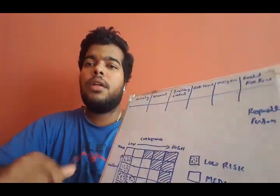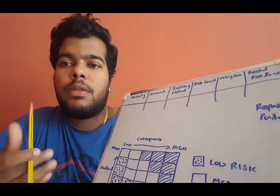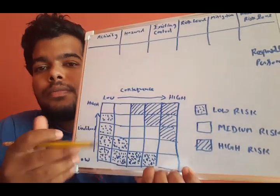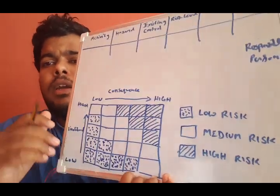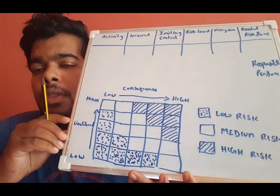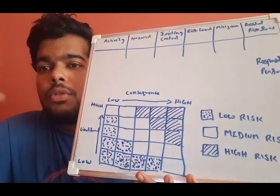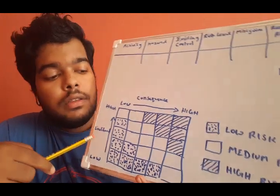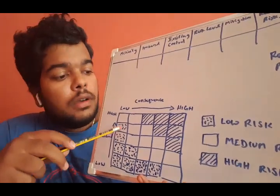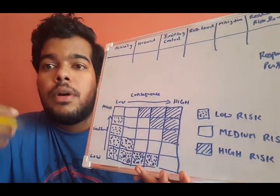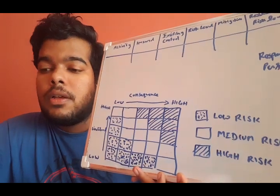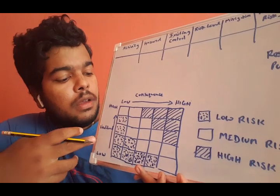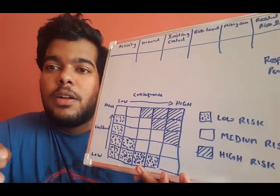So let's take a look at how a risk matrix will look like. This is a standard risk matrix, which I have here. And nowadays there are many kinds of risk matrices in place. So those, it depends upon the companies and the clients. Somewhere you can see in the consequence, it will cover environmental, somewhere in the LTI lost time injuries and in likelihood section, you can see one in hundred, one in ten, one in millions, one in thousands.